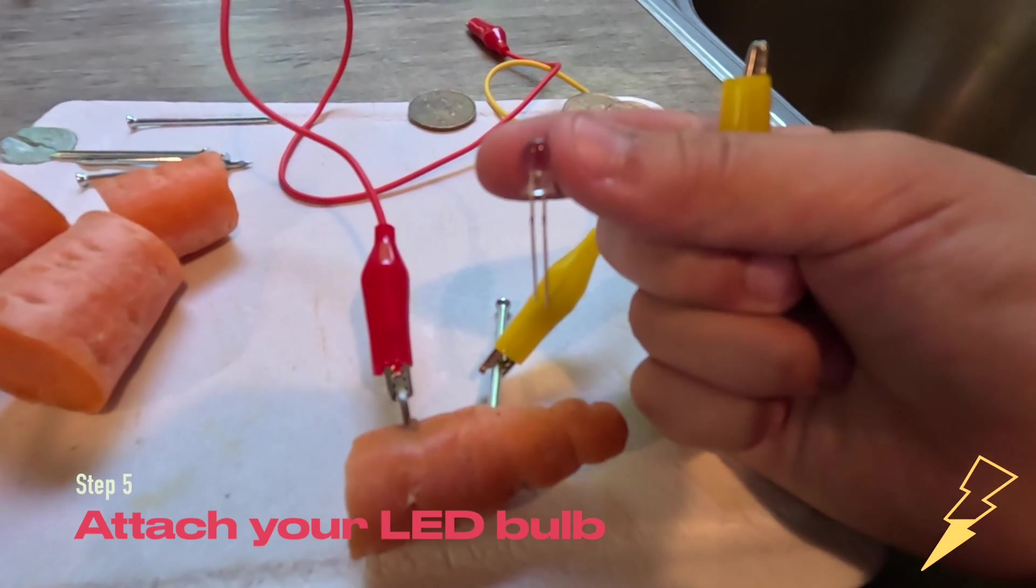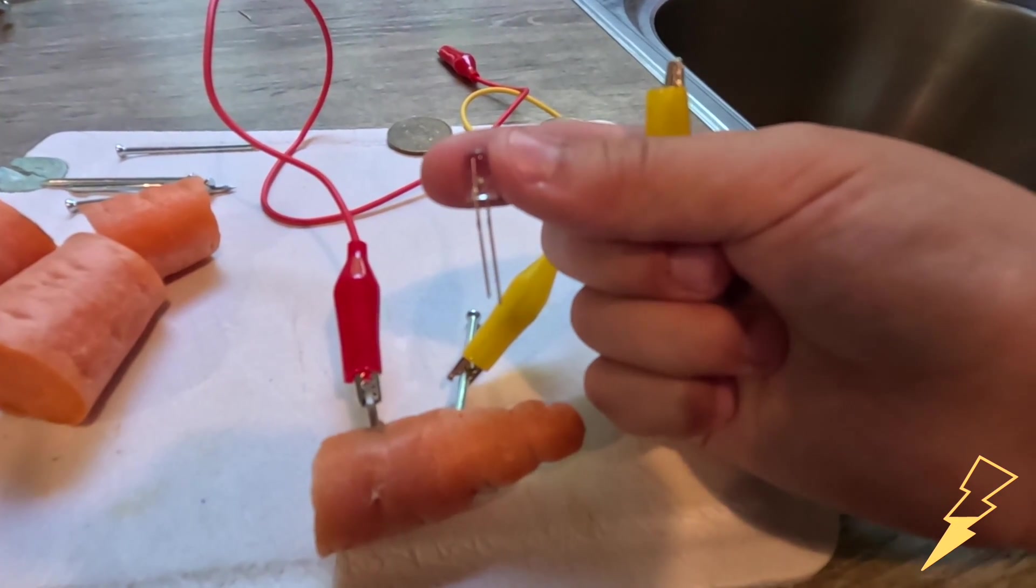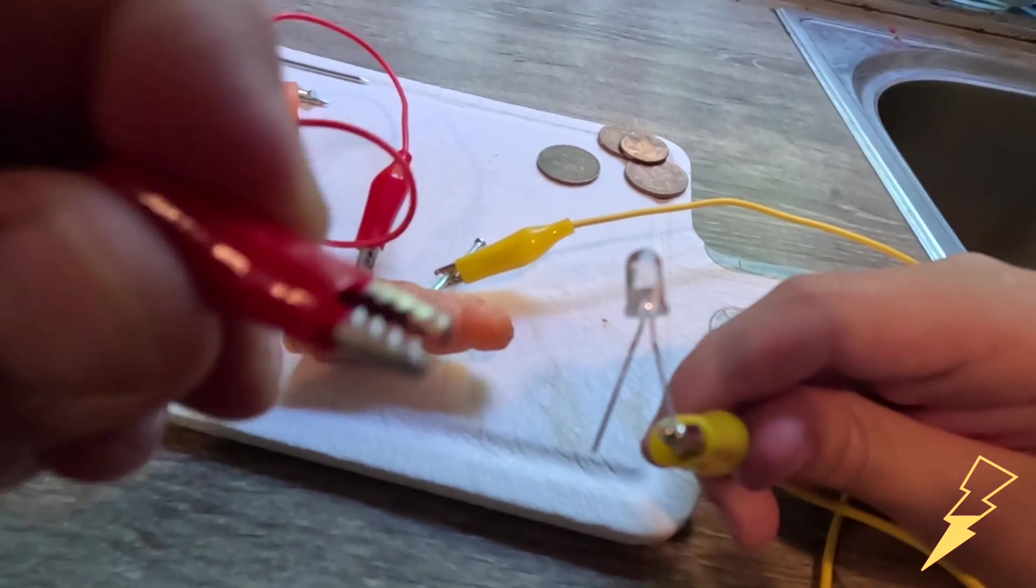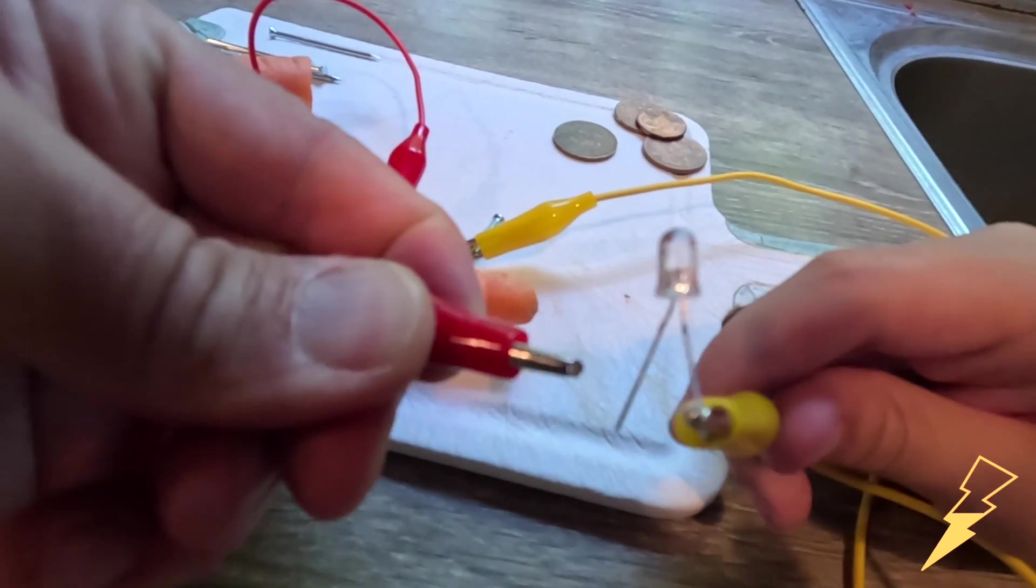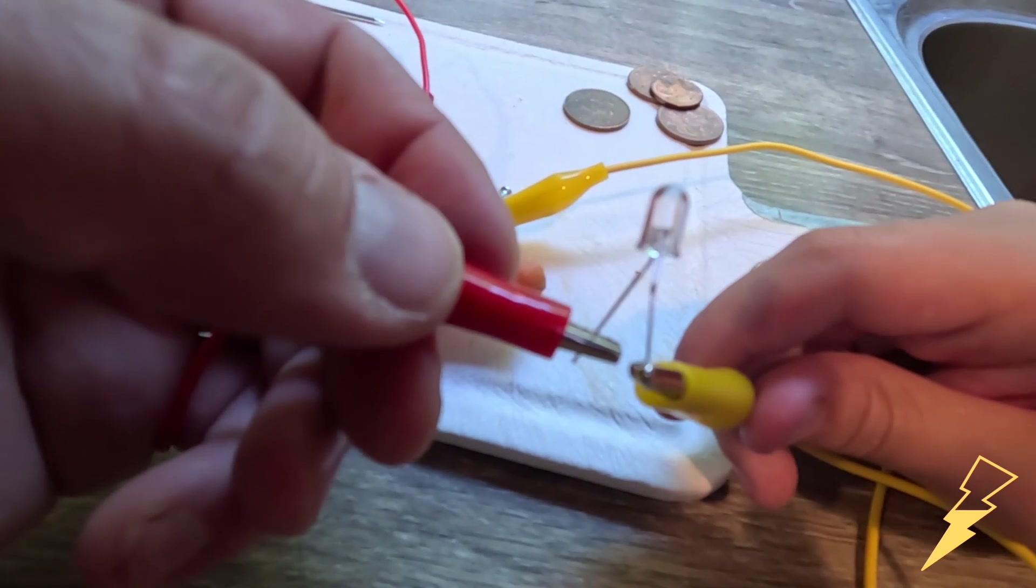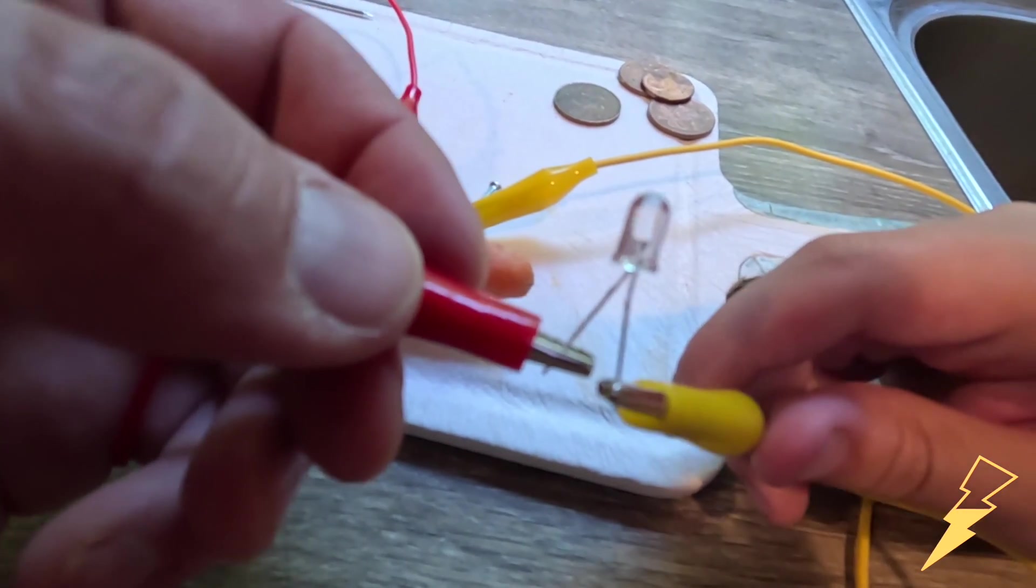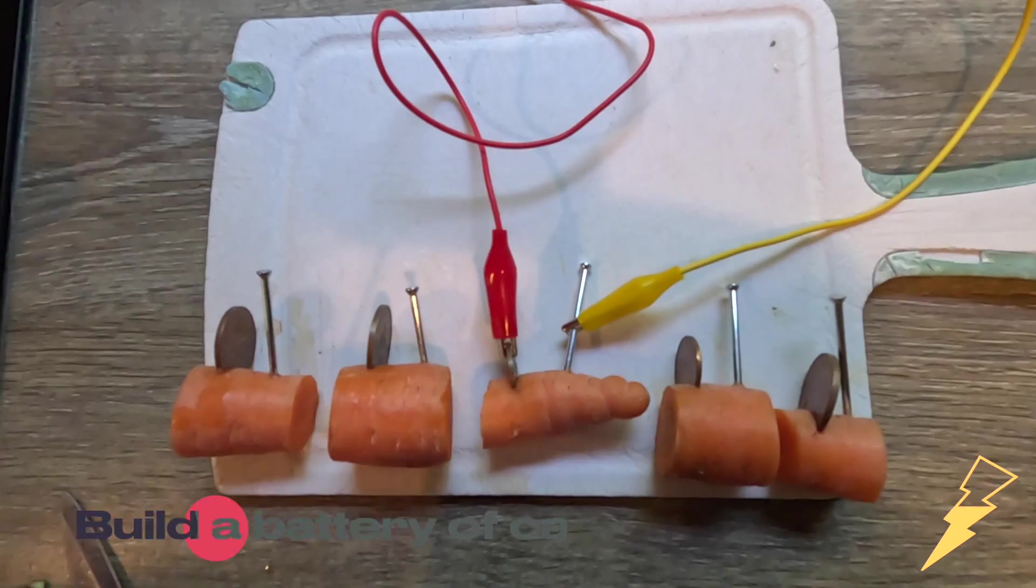You'll notice that the LED or light bulb has got two legs and one is a bit longer than the other. We need to connect the copper coin to the longer of the two legs. Ah, light doesn't come on. Do not worry though. That will just mean we need to build more carrot cells. Let's do that now.